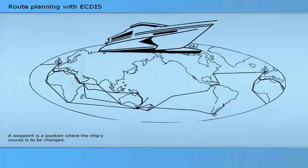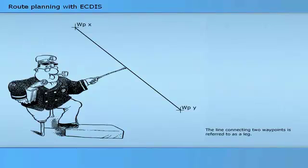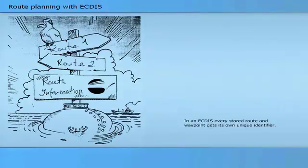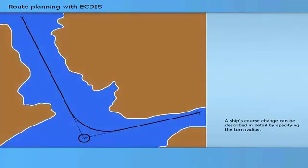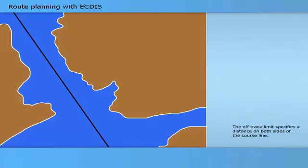Straight lines connecting waypoints show the intended sailing between points. A waypoint is a position where the ship's course is to be changed. Waypoints can normally be inserted by pointing to the required position in the chart or by typing in the latitude and longitude from the keyboard. The line connecting two waypoints is referred to as a leg. In an ECTIS, every stored route and waypoint gets its own unique identifier. A ship's course change can be described in detail by specifying the turn radius, and the actual circle segment will be drawn on the chart. The off-track limit specifies a distance on both sides of the course line to control the ship's deviation from the planned track.